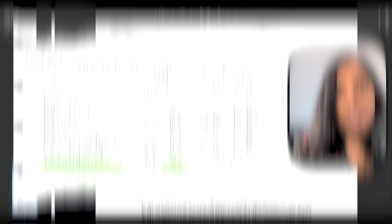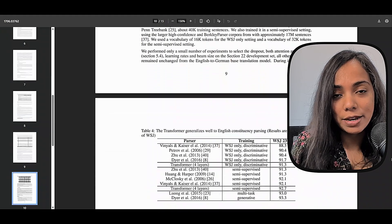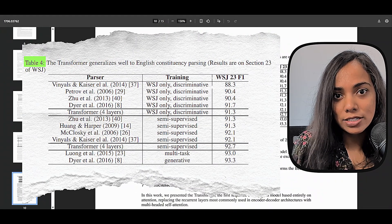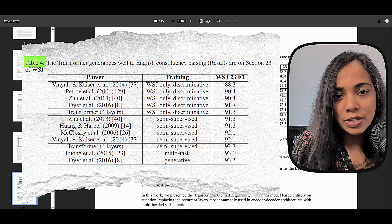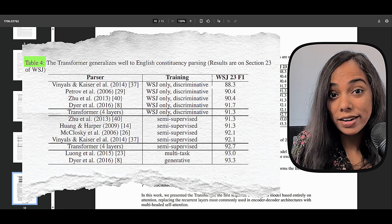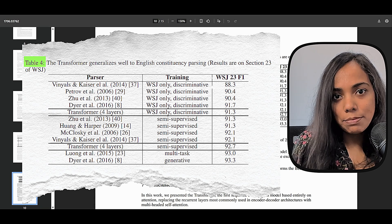Transformers set new standards for translating languages like English to German. Single models beat entire groups of models. Another big takeaway is that transformers didn't just translate. They also understood grammar and meaning deeply. They outperformed specialized models without extra tuning. This is implicitly shown through its performance on tasks requiring such understanding, such as English constituency parsing.